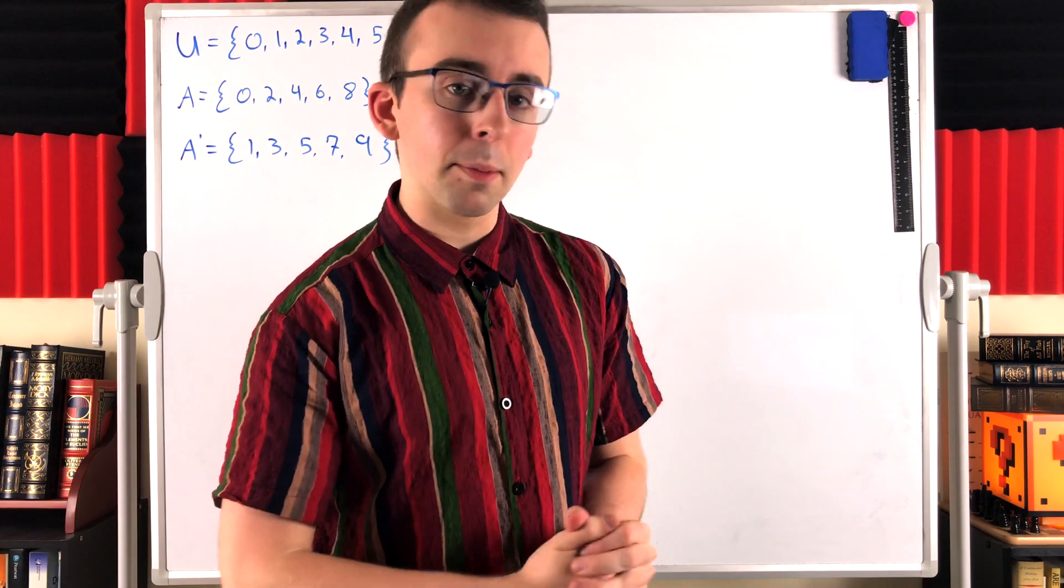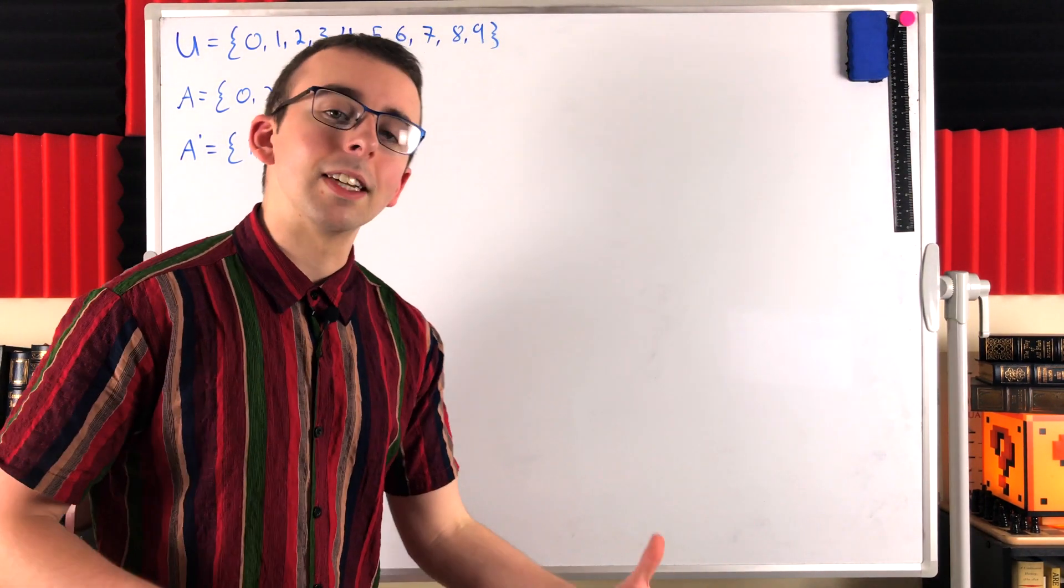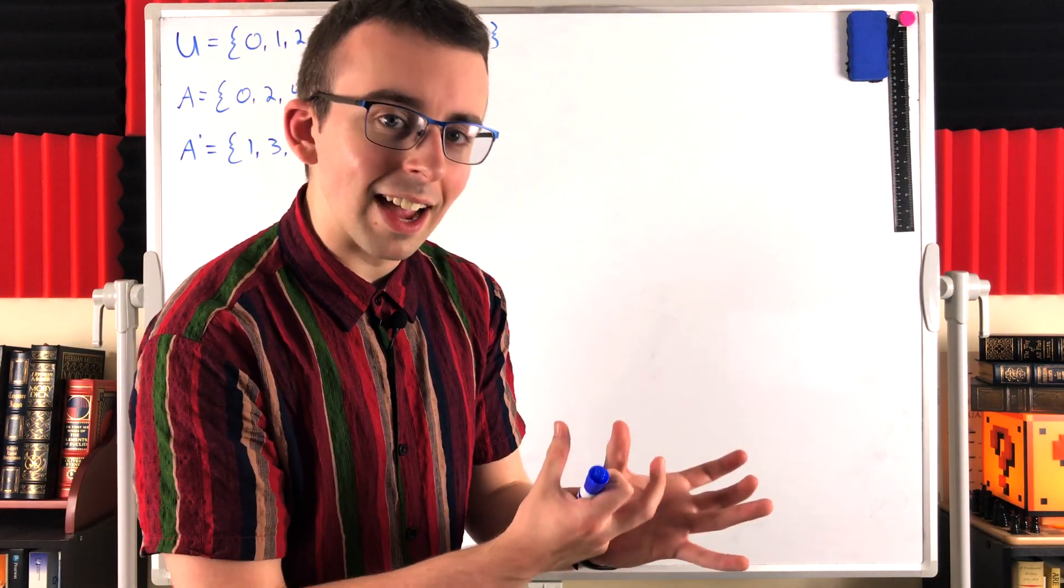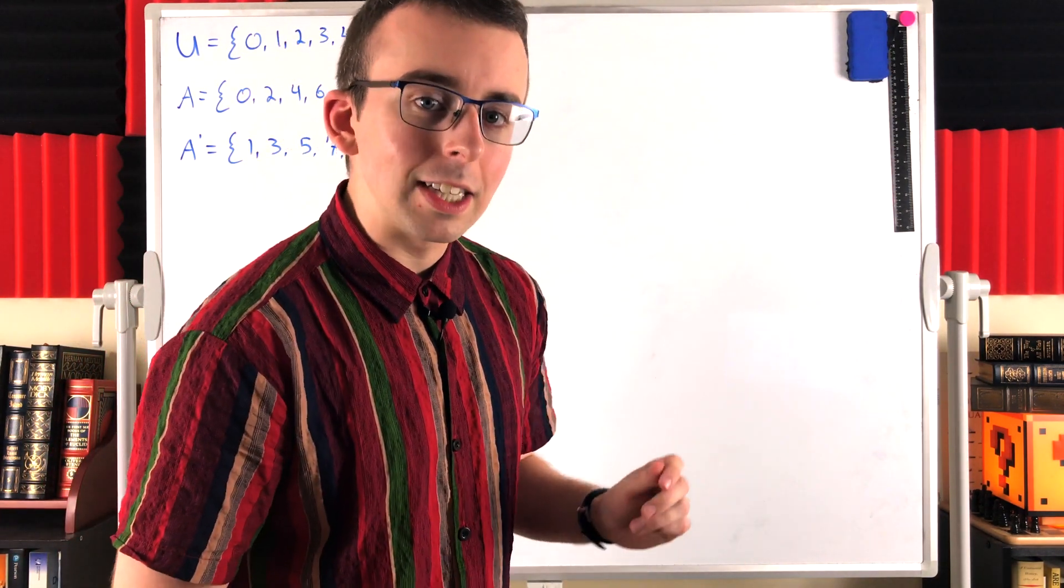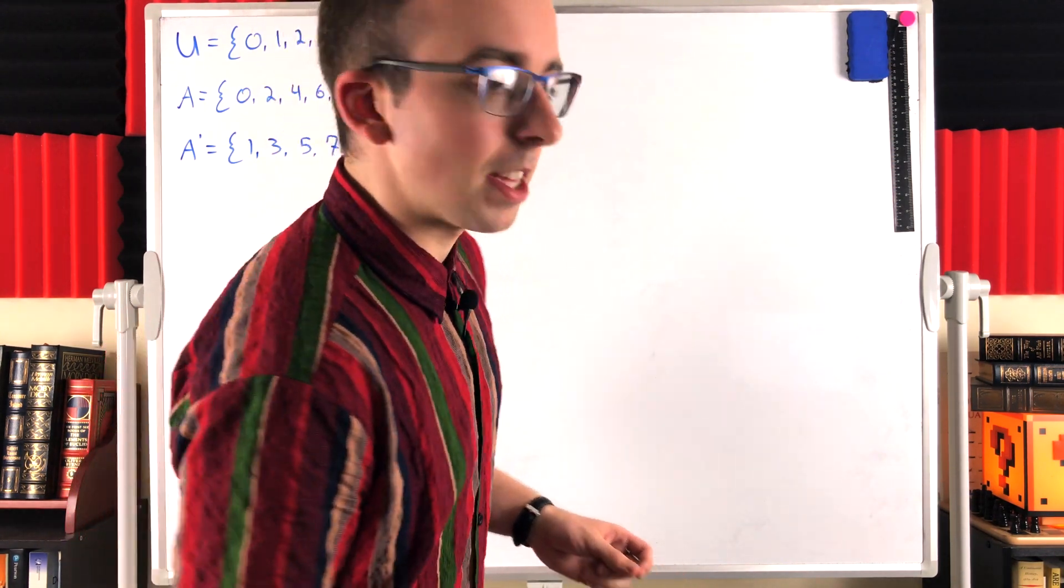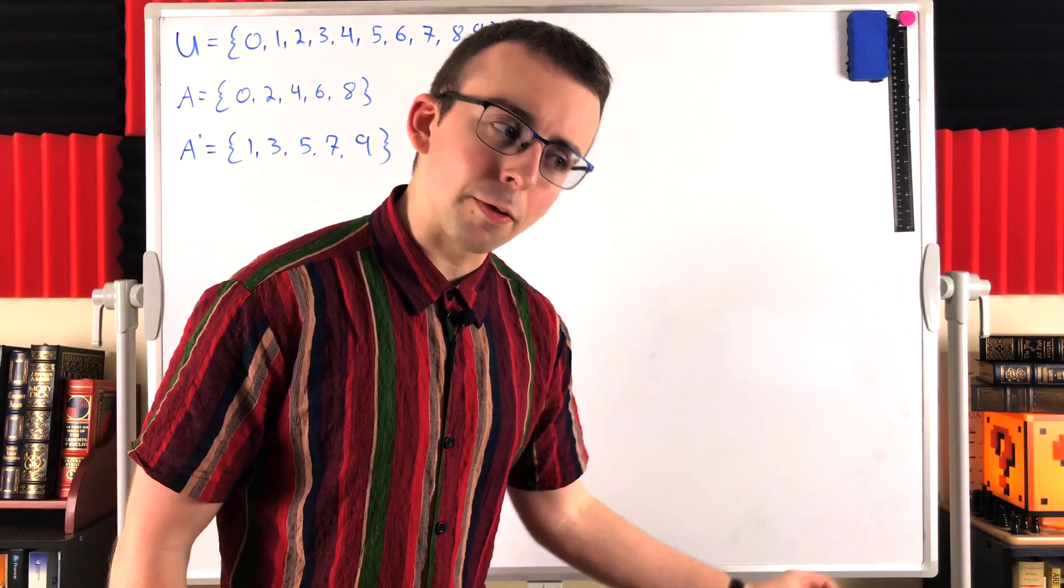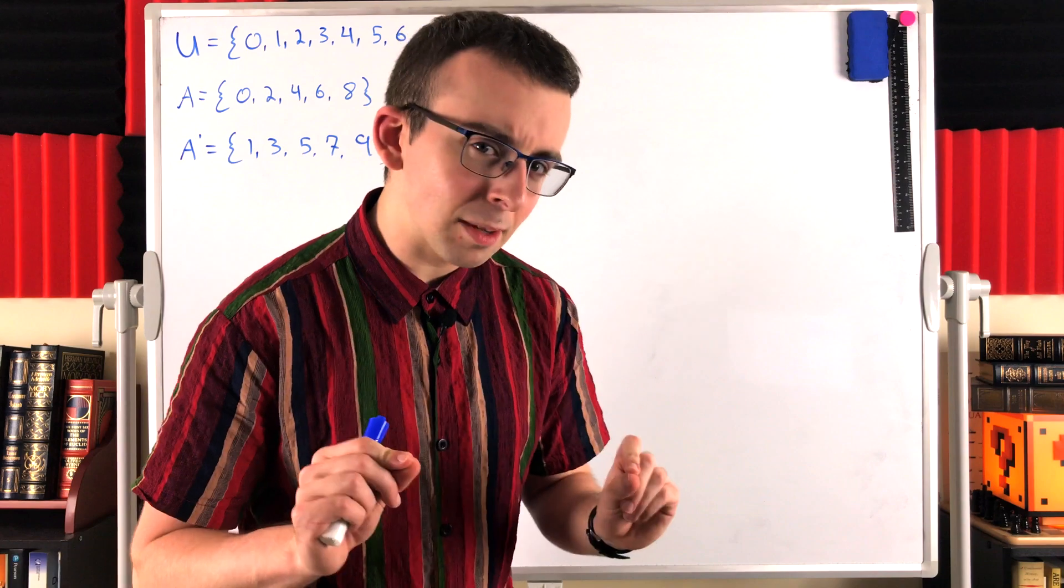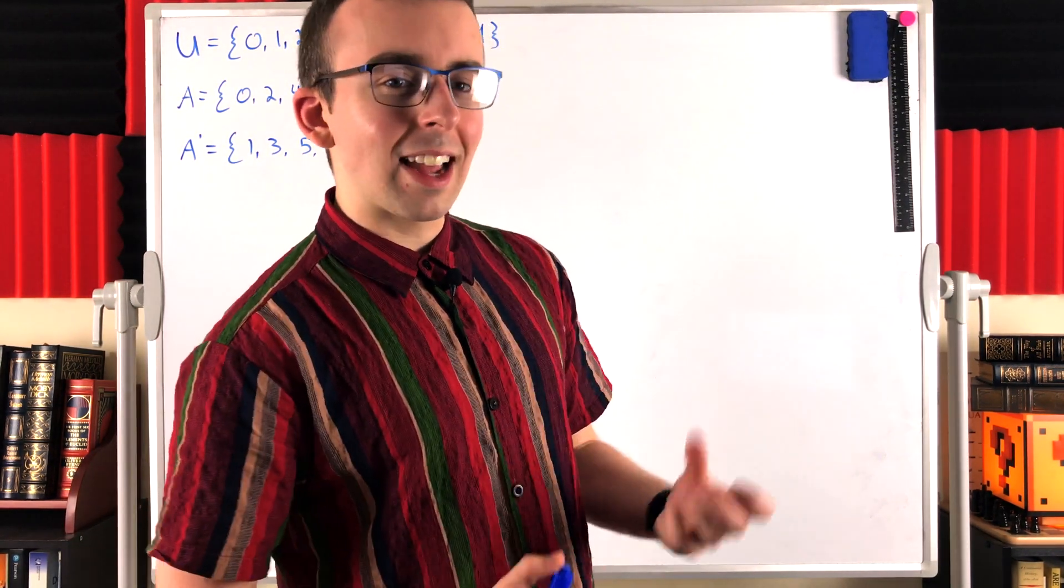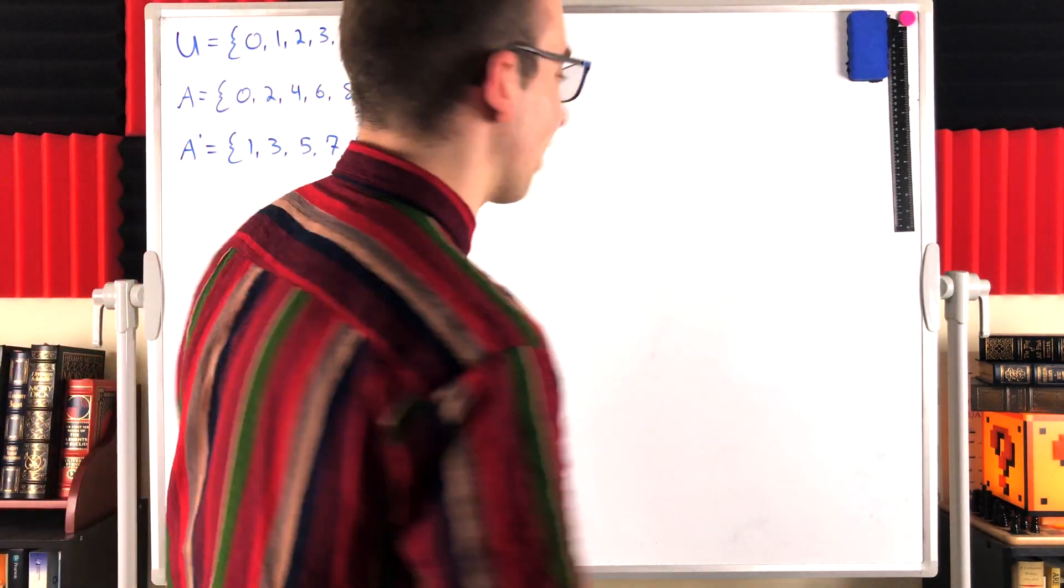We're only talking about absolute complements in this video. Another possibility is that you might consider relative complements between two sets that are not necessarily subsets of each other. Either one could not be a subset of the other. Now the double complement thing works a little different for that situation. It's very similar, but there's an important difference. After this lesson, I encourage you to figure out exactly how that works on your own and let me know what you think in the comments.